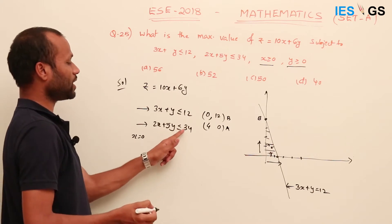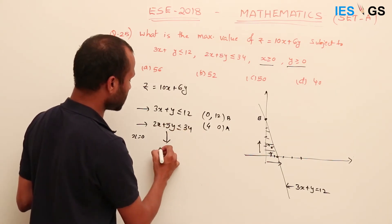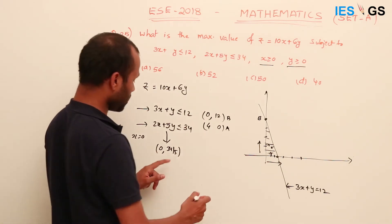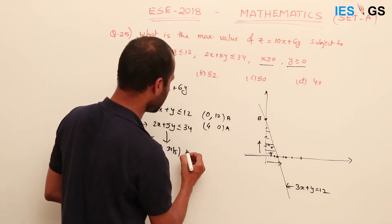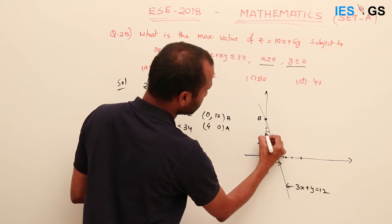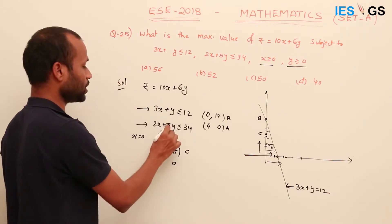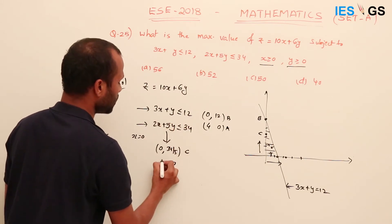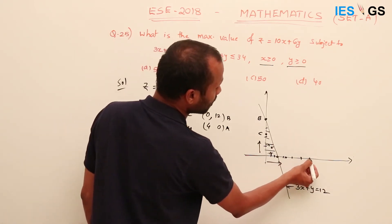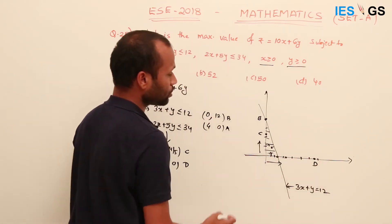The second condition is 2x + 5y ≤ 34. Plot this line: put x = 0, then 5y = 34, so y = 34/5 ≈ 7. The first point is (0, 34/5), call it point C. Now put y = 0: 2x = 34, so x = 17. The second point is (17, 0), call it point D.